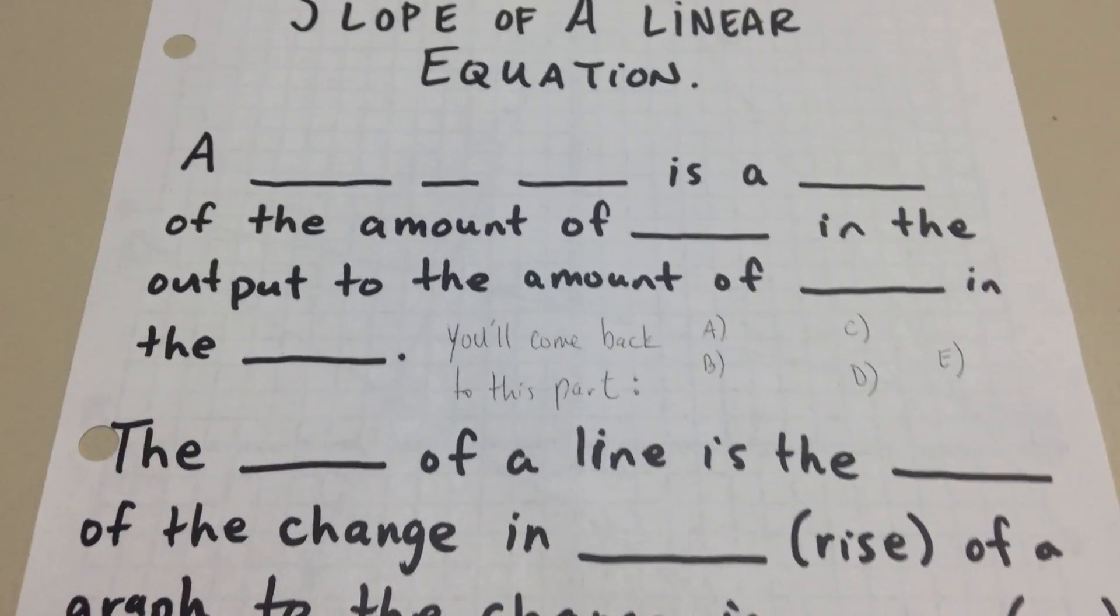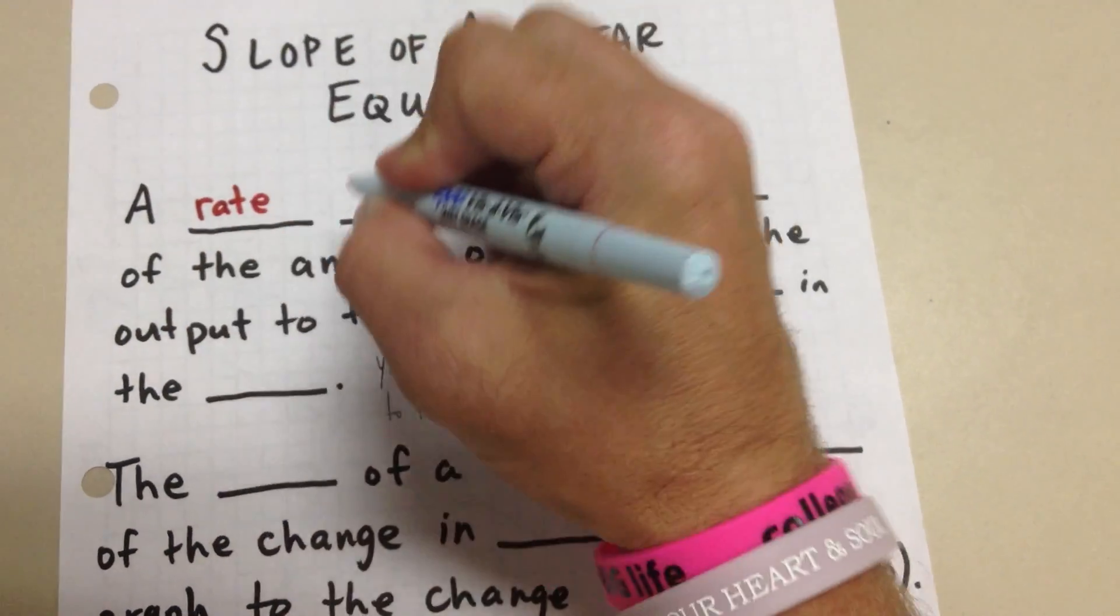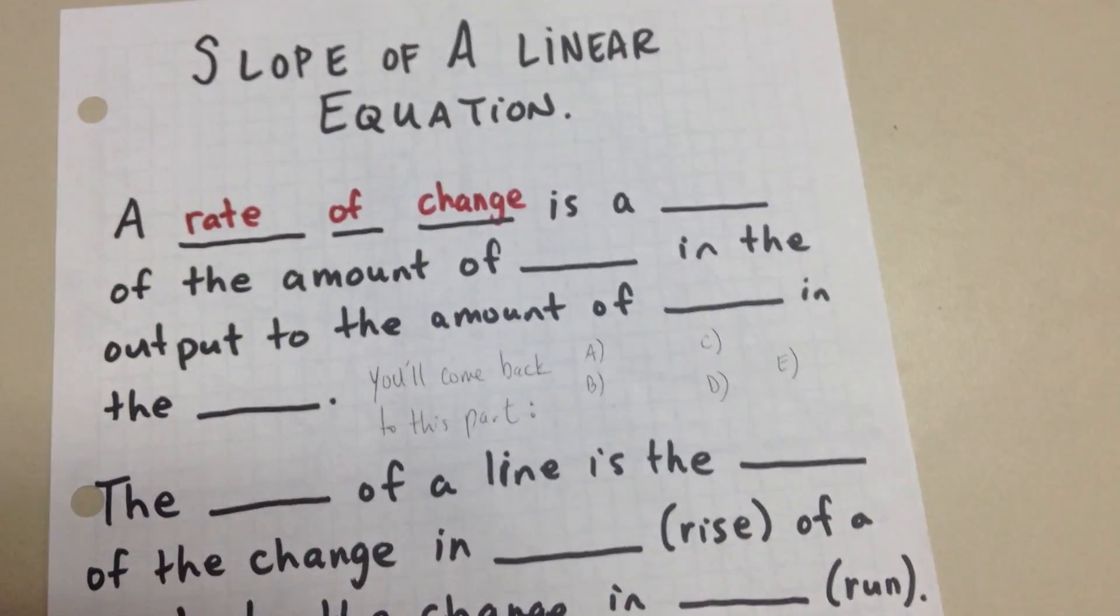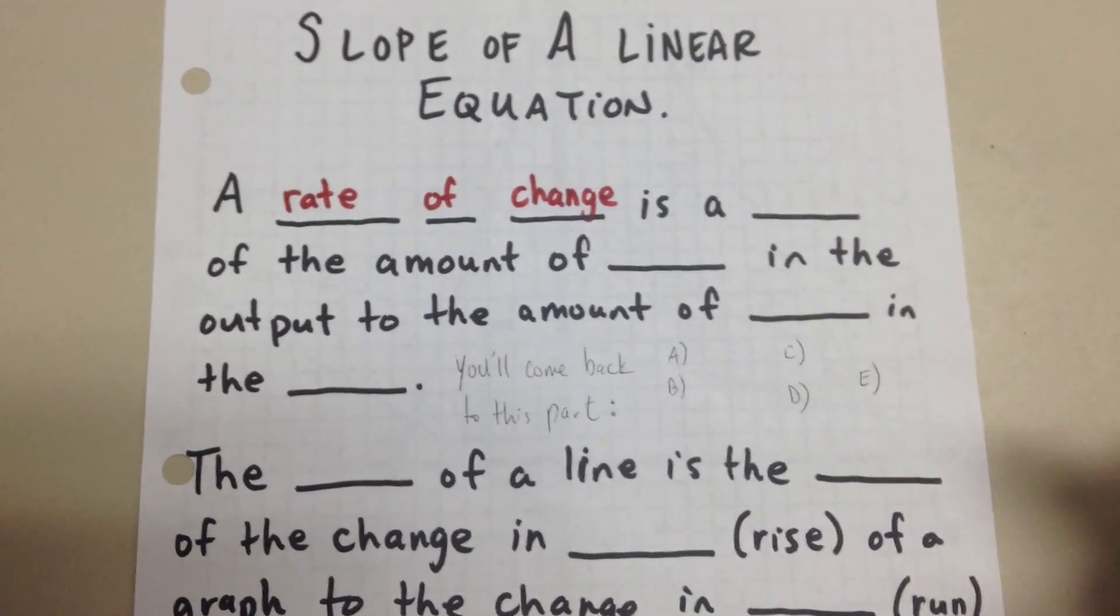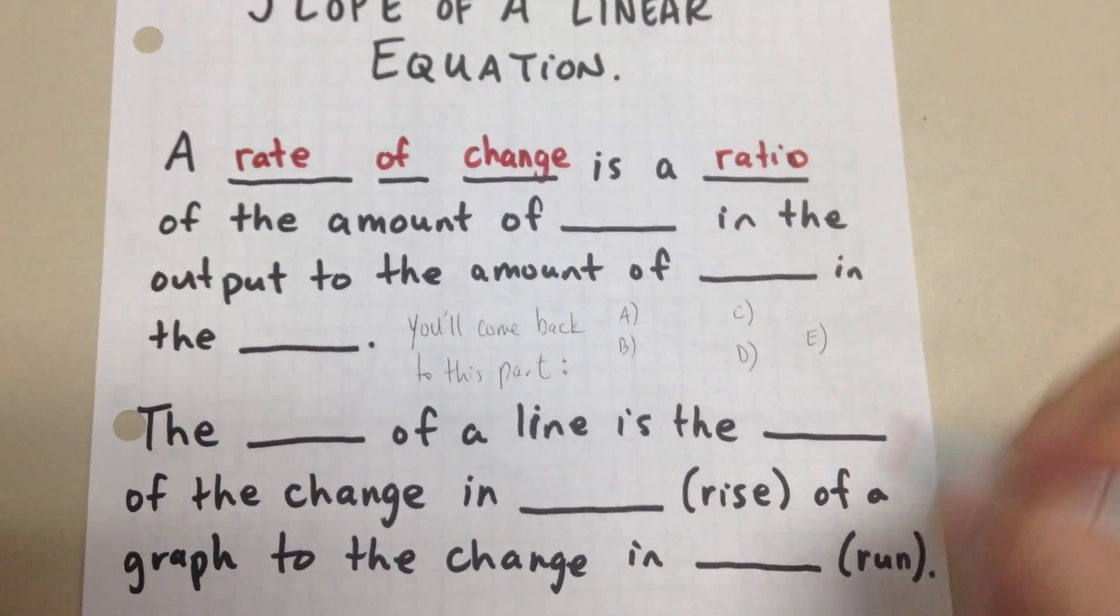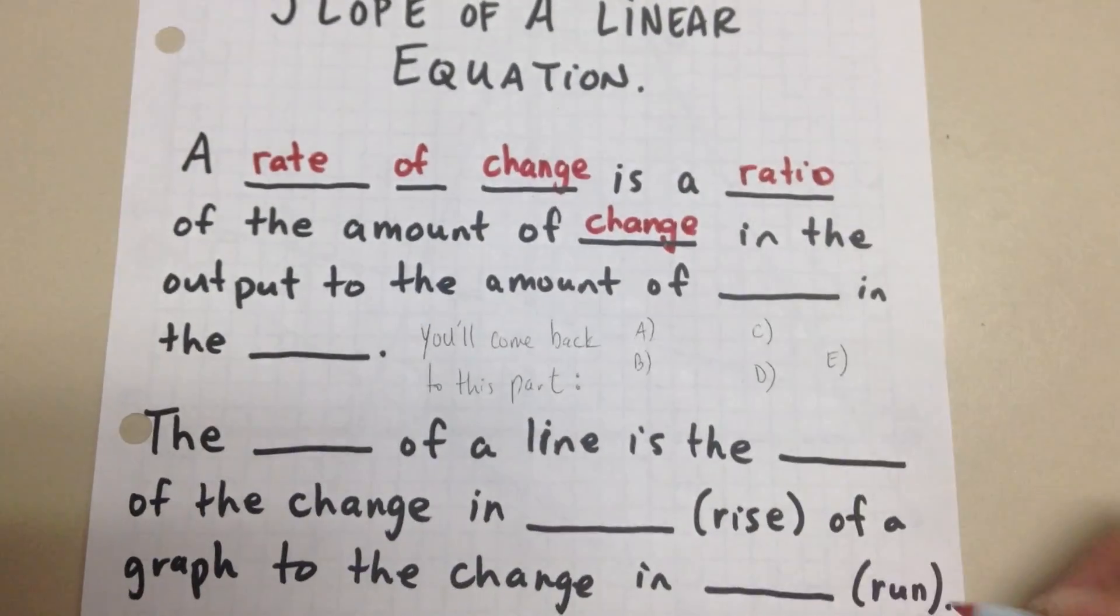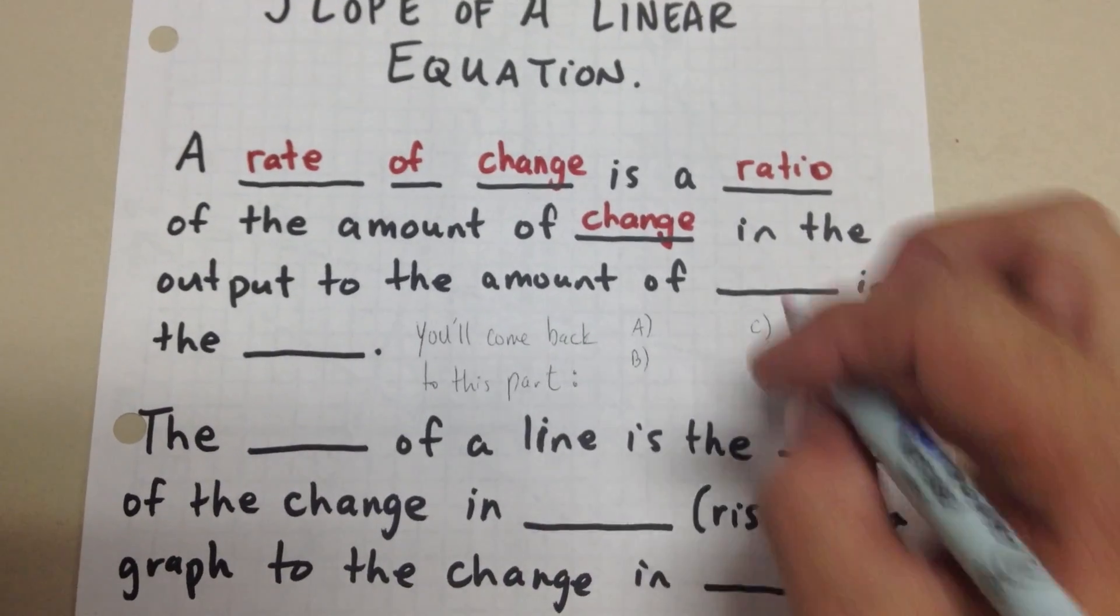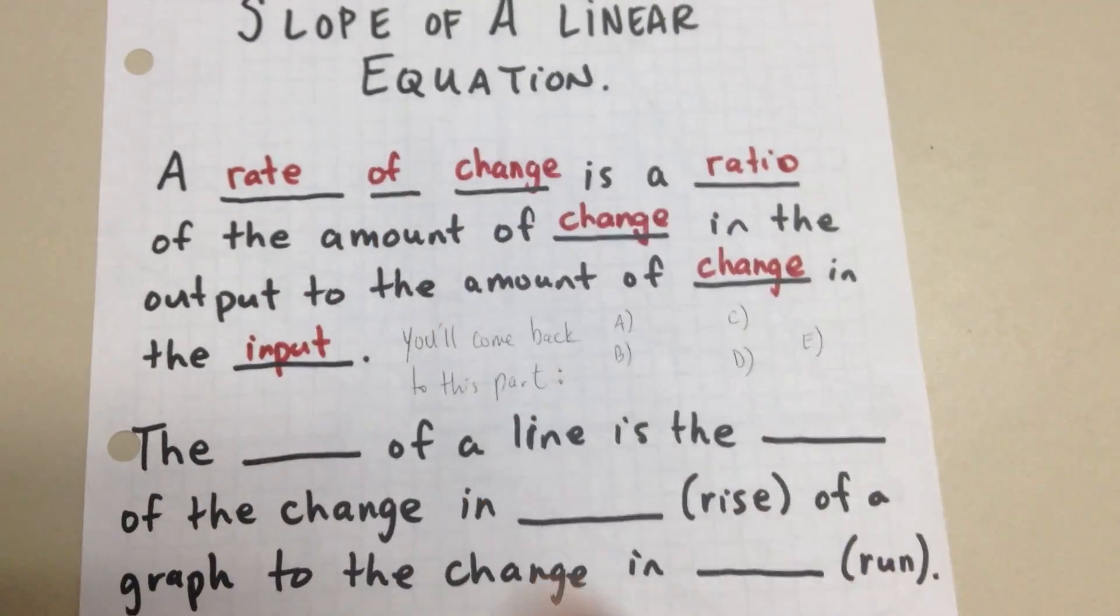So let's write down our notes first. Let's start out with this first blank here. And this is a rate of change. And this is something we've been talking about for the last couple days. The rate of change is the constant, the thing that does not change. This is a ratio of the amount of change. And again, when we say change, we're not talking about money in your pocket. We're talking about something actually changing. So it's the amount of change in the output to the amount of change in the input. And this will make a lot more sense here in a minute.